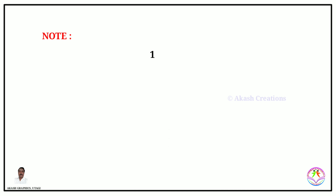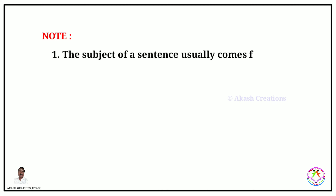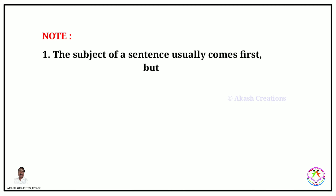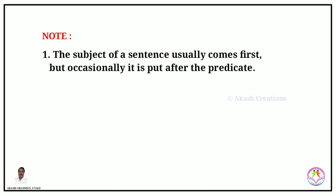The subject of a sentence usually comes first, but occasionally it is put after the predicate. For example: 'Down went the royal George.'